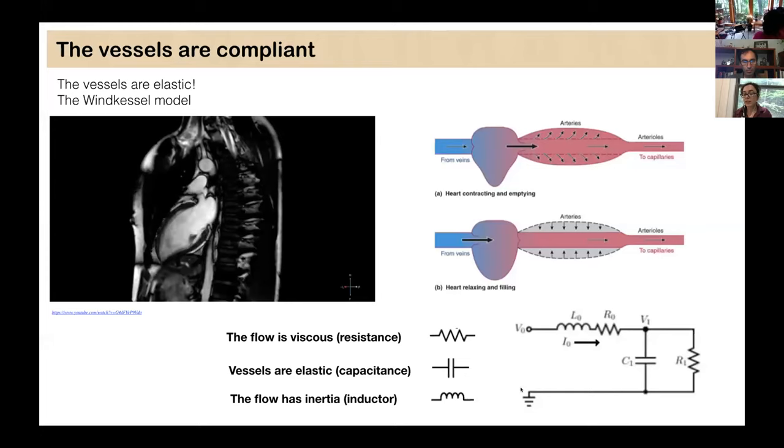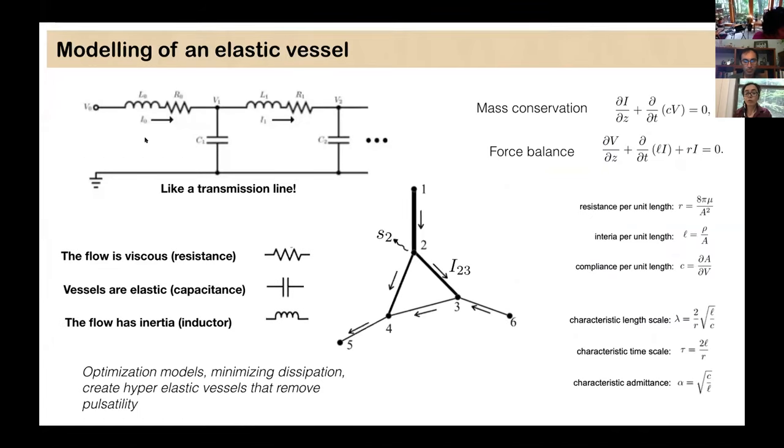You can take this model and you can make a lumped model, which is called the Wind Kessel model. You have resistors because the flow is viscous. You have capacitors because the vessels are elastic. You increase the pressure of the vessel stretch. And you have inertia because the fluid has inertia. And you have inductors. You can put them all together and make this model. This is a lumped model. Here is the heart. And this is the entire body, this resistance. But now, of course, what one can do, and by one, I mean Sean,